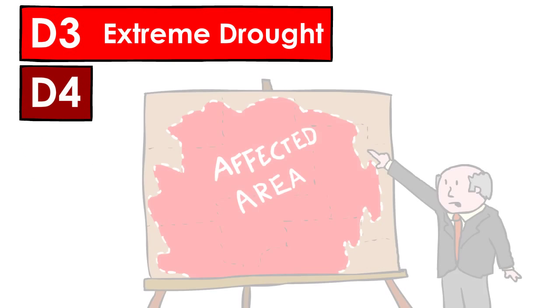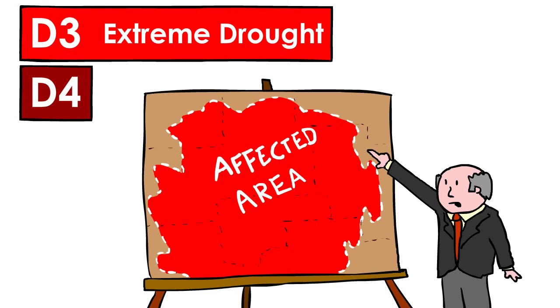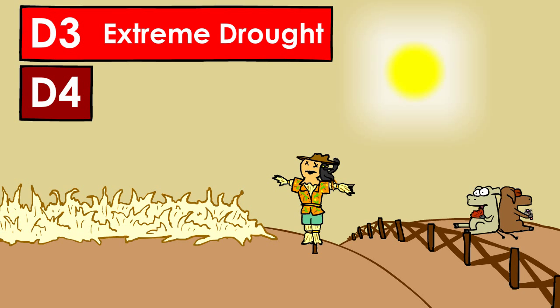D3 levels would be considered extreme drought. Water shortages and restrictions would be widespread, and major crop and pasture losses would be imminent.